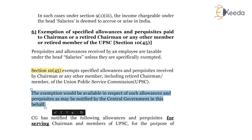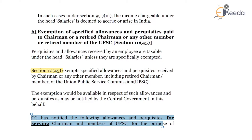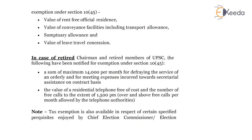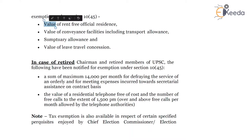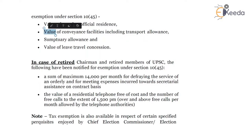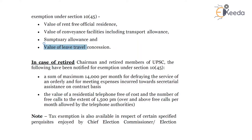The central government has notified the following allowances and perquisites for serving chairman and members of UPSC for the purpose of exemption: value of rent-free official residence, value of conveyance facilities including transport allowance, sumptuary allowance paid to the serving chairman and serving members, and value of leave travel concession. All these four allowances will be exempt as per clause 45 of section 10 in the hands of the serving chairman and serving member.